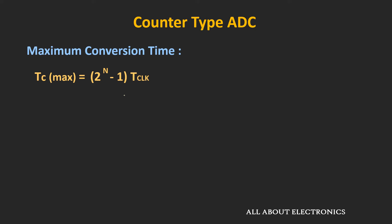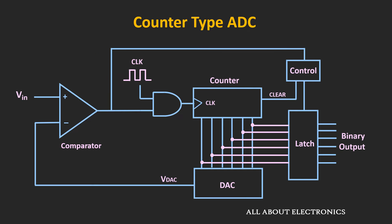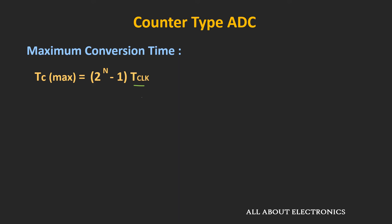The conversion time depends on the resolution as well as the clock frequency. As the number of bits increases, the conversion time will also increase. Speaking of the resolution, the resolution of this type of ADC depends on the resolution of the DAC. That means if the resolution of the DAC is 8-bit, then the resolution of this entire ADC will be equal to 8-bit. If we increase the resolution beyond a certain extent, the conversion time of the ADC will get affected. So there is a trade-off between the resolution and the conversion time. By increasing the clock frequency, we can reduce the conversion time, but that too cannot be increased beyond a certain limit.